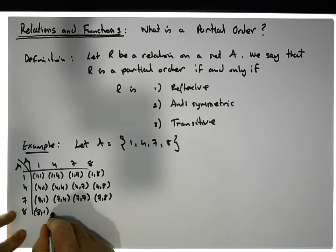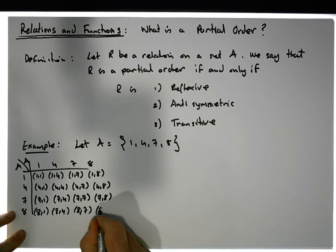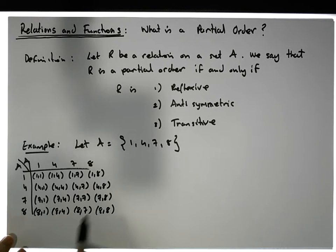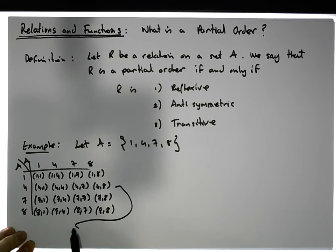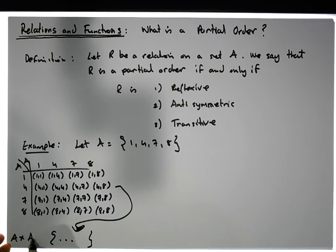Then we have (8,1), (8,4), (8,7), and (8,8). We take all of these ordered pairs and put them into a set — that is the cross product of A with A. From this we're going to choose some values to form a specific relation.